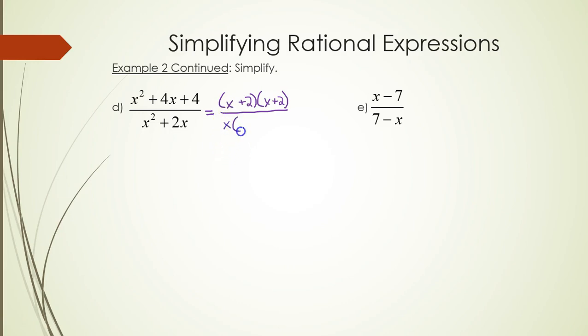One factor of x plus 2 on top cancels out one factor of x plus 2 on the bottom. You're left with x plus 2 over x.